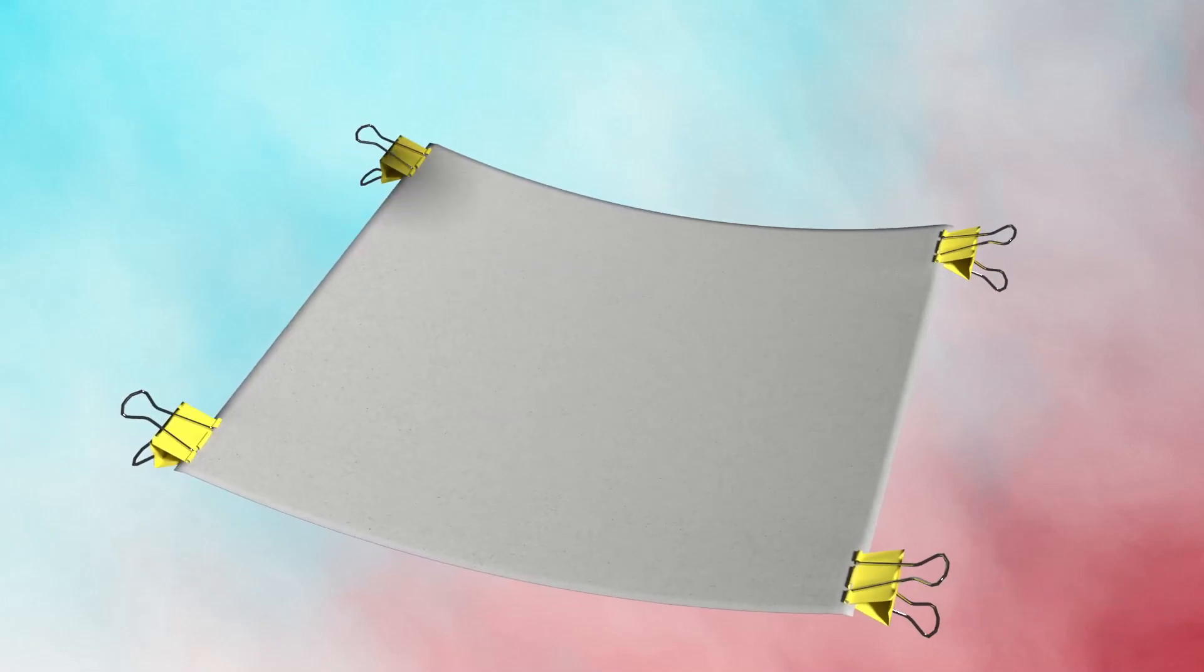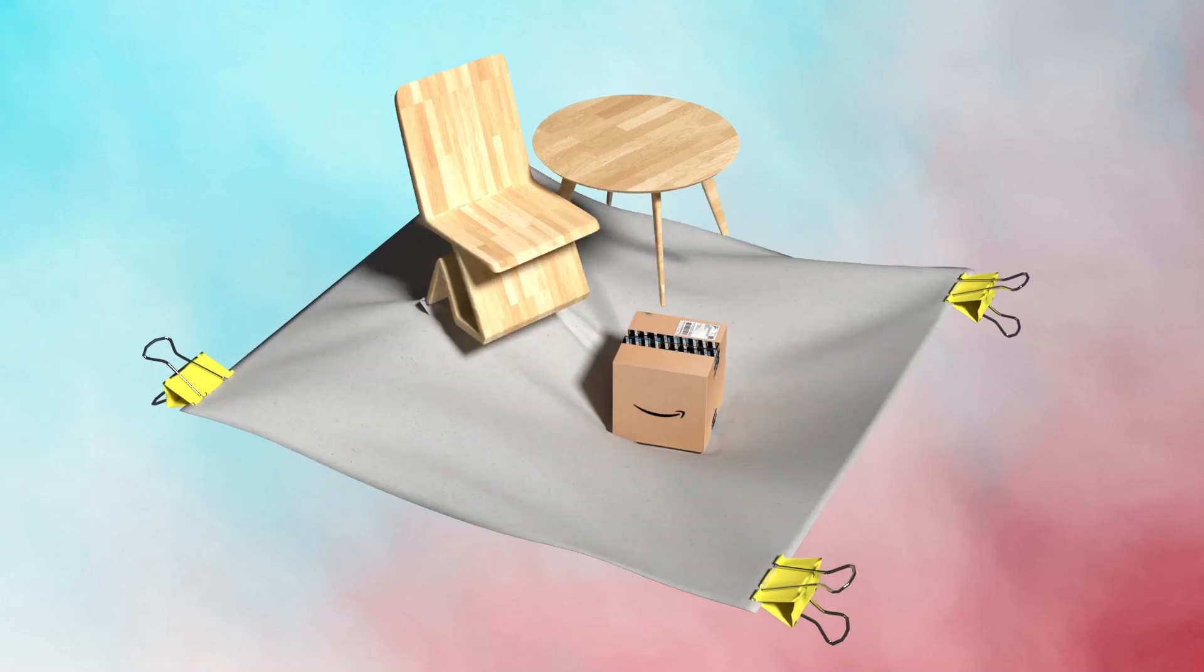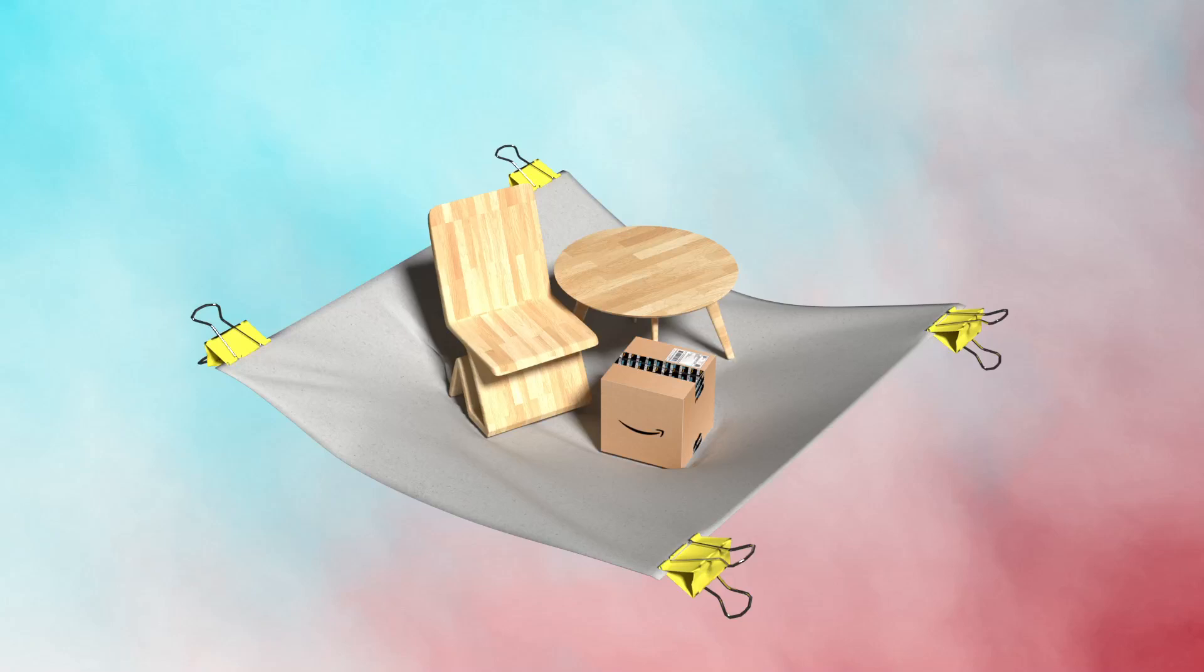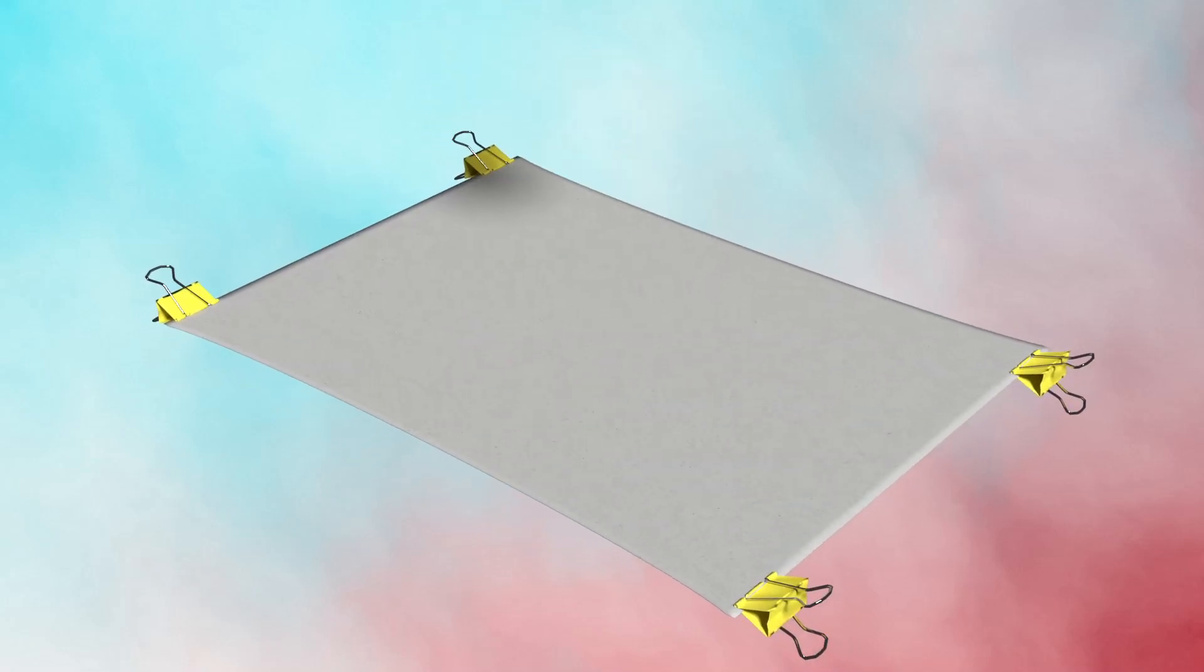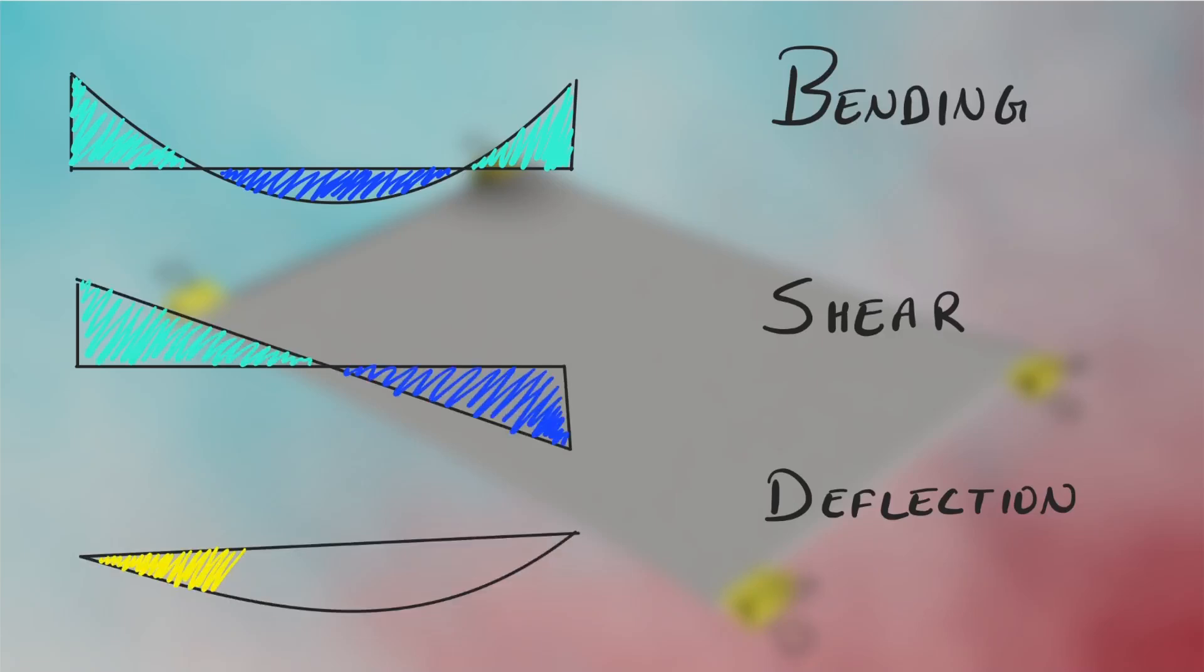Imagine a slab like a thin sheet of paper. When the slab is subjected to a load, it deflects. It is our job as an engineer to design the slab such that it resists the load and does not fail. There are three ways a slab can fail: failure in bending, shear, and deflection.